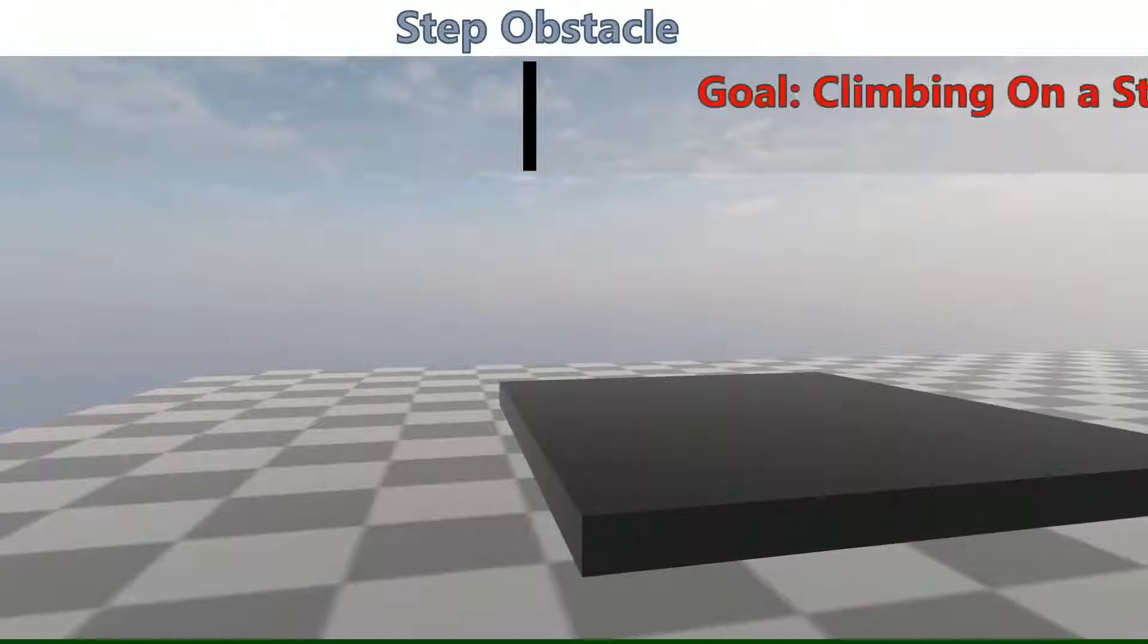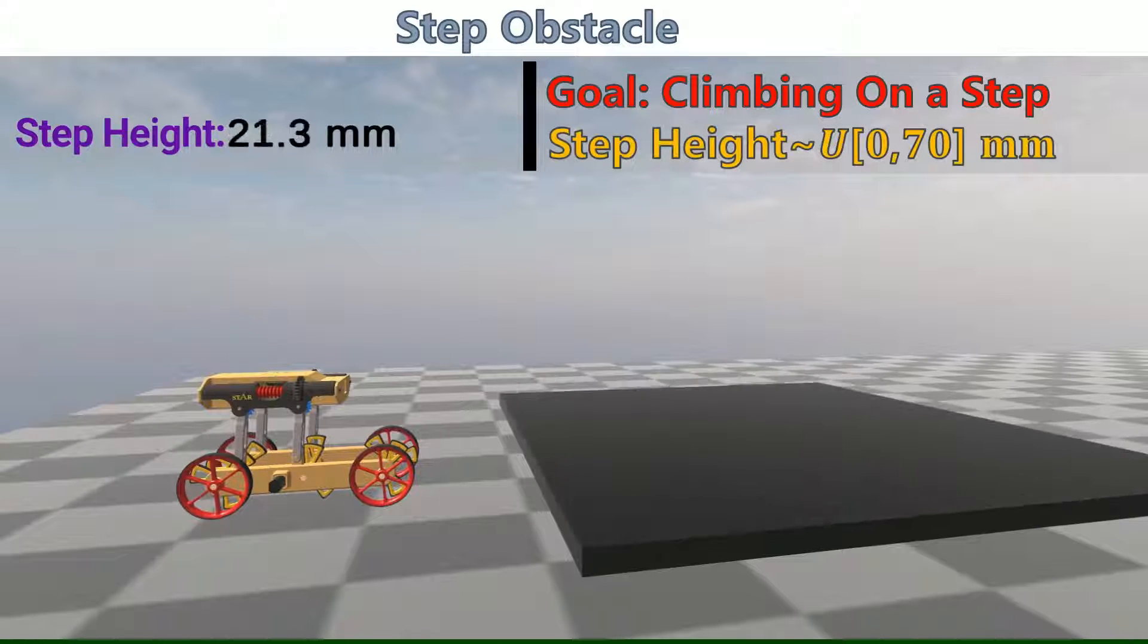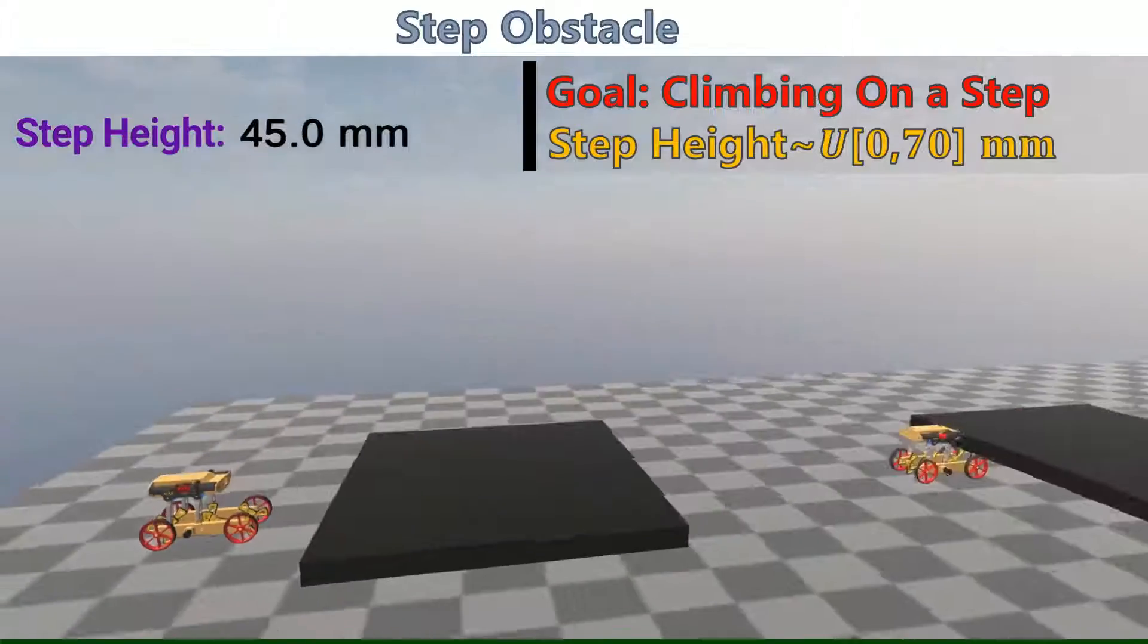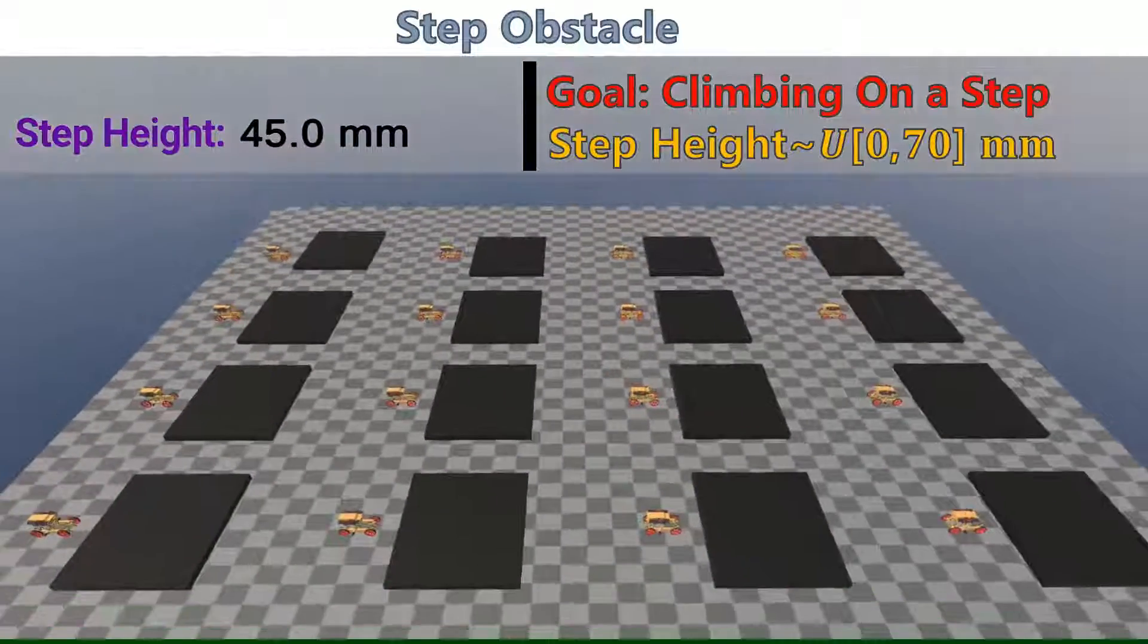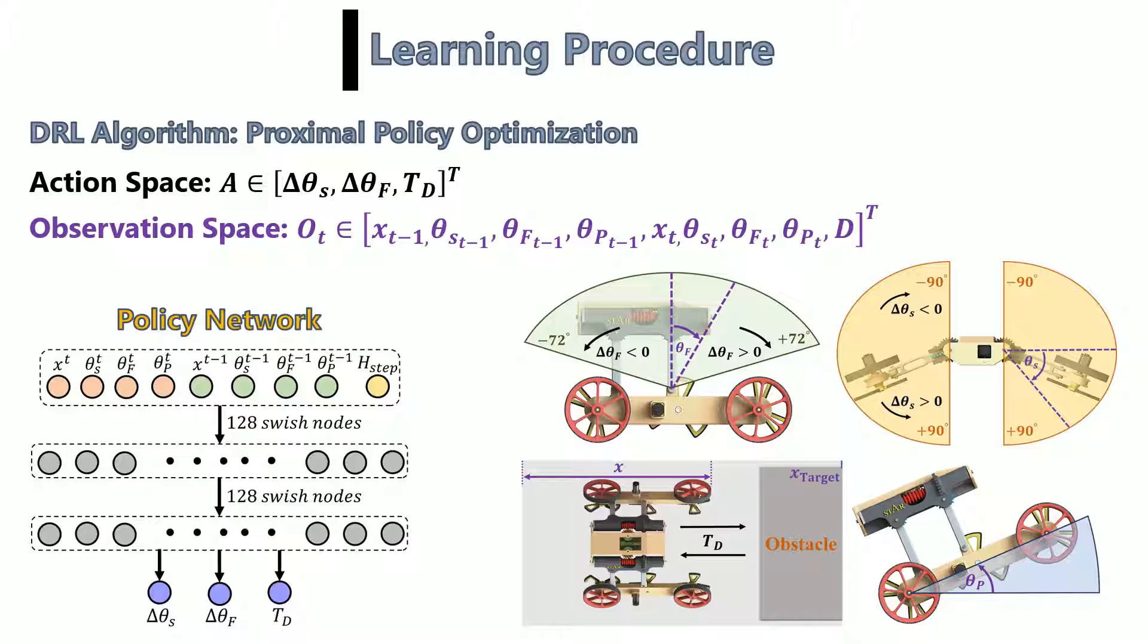The first simulation environment includes a step obstacle in a range of heights the robot has to climb on. We use the proximal policy optimization algorithm with continuous state and action spaces such that the dimensions of the obstacle are included in the agent's observation.